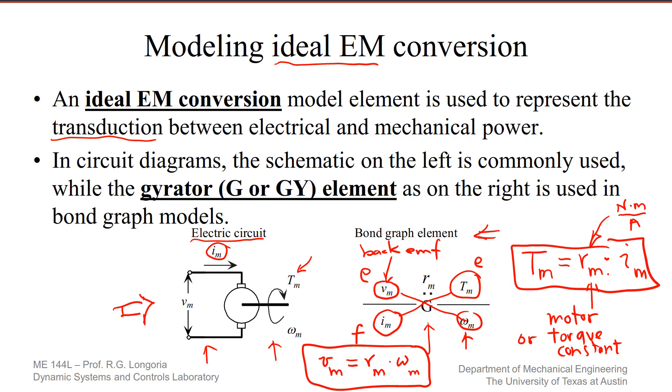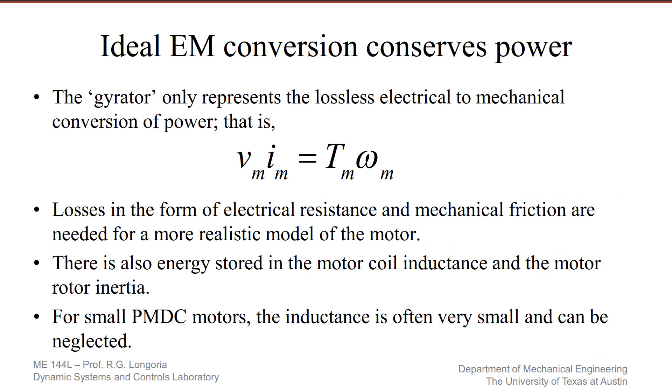What we want to do in the lab is estimate R-sub-M. When we look at something like a gyrator, we're capturing this ideal power conversion. Keep in mind that this VM times IM is related to TM and omega-M. The power in and out here is equal on these two power bonds.